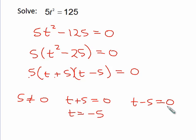And adding 5 to both sides on the second one, I get t is positive 5. So my two solutions then would be negative 5 and positive 5.